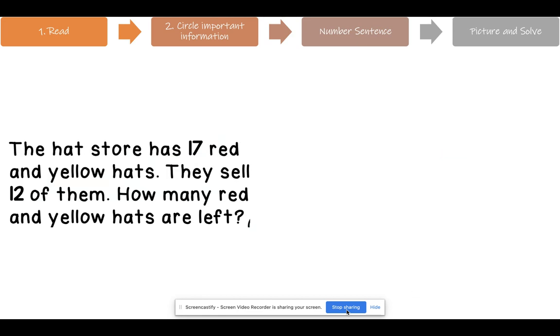Here's the next one. Let's go ahead and follow the first step, which is read. Let's read the word problem. The hat store has 17 red and yellow hats. They sell 12 of them. How many red and yellow hats are left? What is important here? That's right. All of that information is important. So let's go ahead and circle it. 17 is important because that's how much we started with. Sell is important because that means that some of them went away. 12 is important because that let me know how many of them went away. And how many red and yellow hats are left is the question that we need to answer. So that is very important.